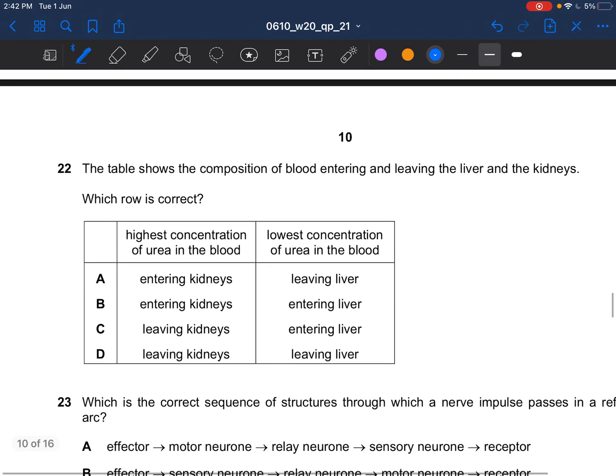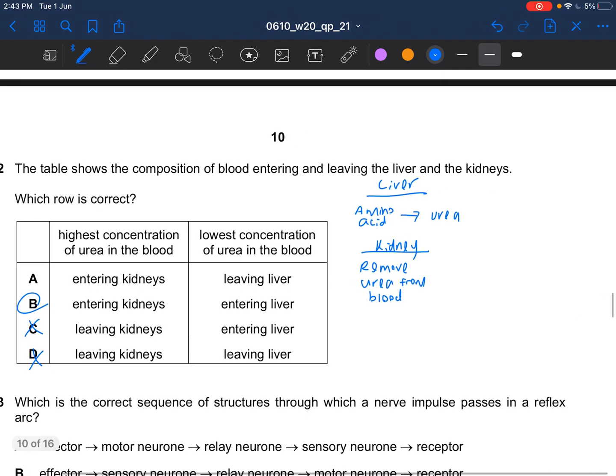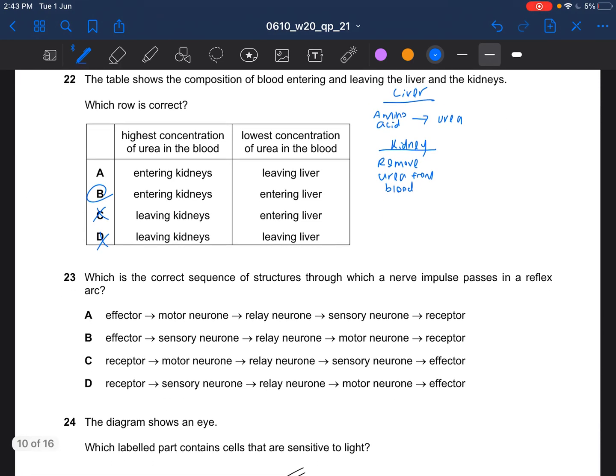Next question. The table shows the composition of blood entering and leaving the liver and the kidneys. Which rule is correct? Your liver is responsible to convert excess amino acids to urea. The process is known as deamination. While your kidney is responsible to remove urea from blood. So you have the highest concentration of urea entering the kidney and lowest concentration entering the liver. So the answer for question 22 would be B.